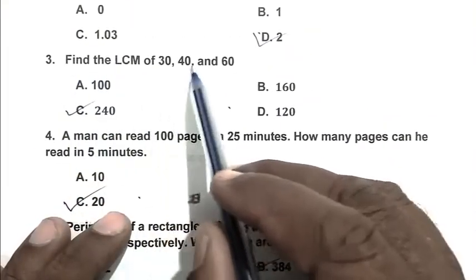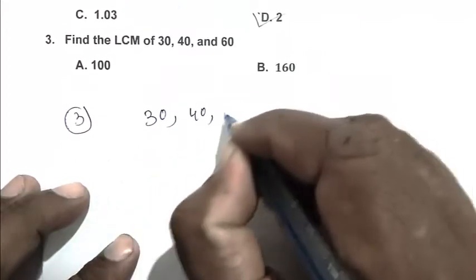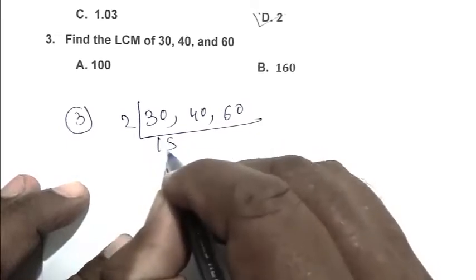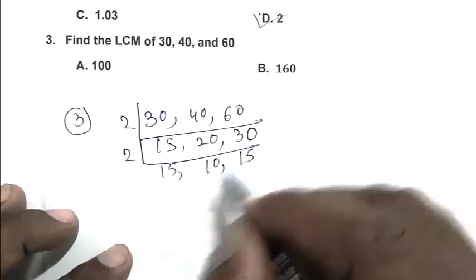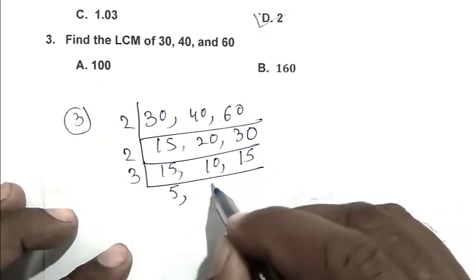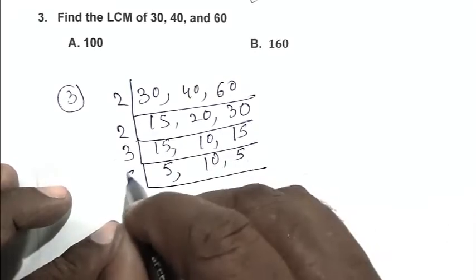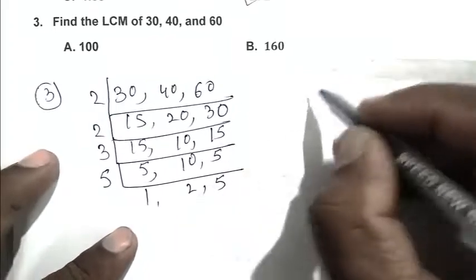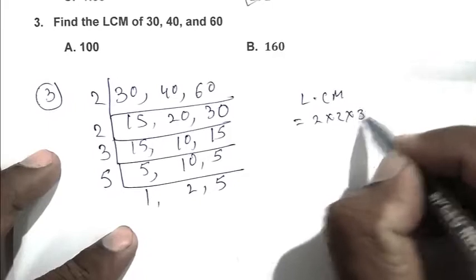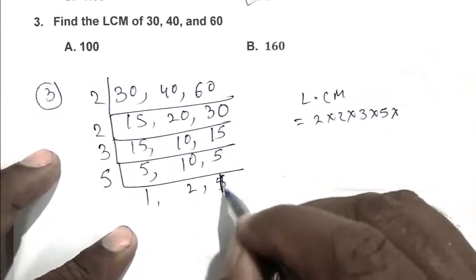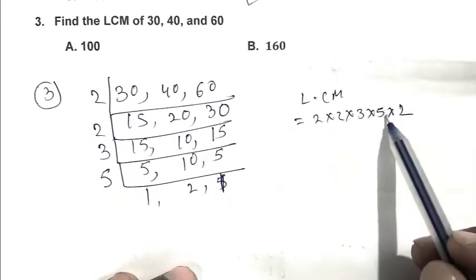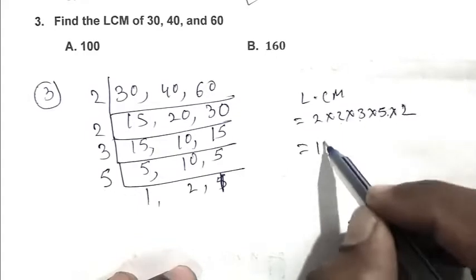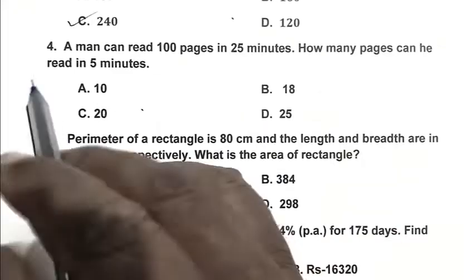Question number 3: Find the LCM of 30, 40, and 60. We can calculate LCM: 30, 40, and 60. First divide by 2: 15, 20, 30. Again by 2: 15, 10, 15. By 3: 5, 10, 5. Again by 5: 1, 2, 1. So LCM equal to 2 times 2 times 3 times 5 times 2, that is 120. So D is the right answer.